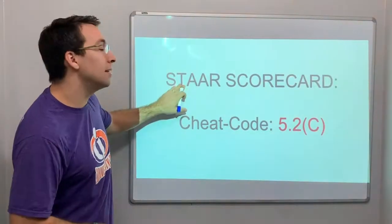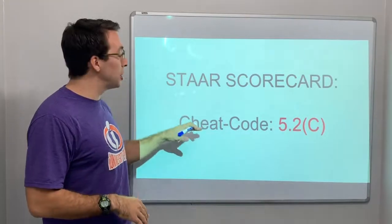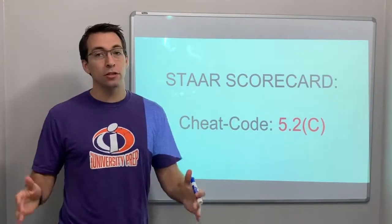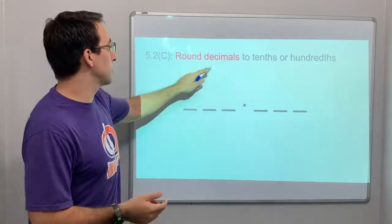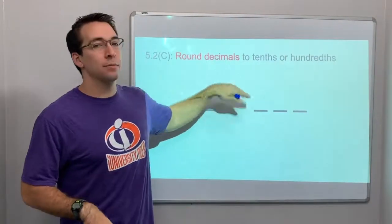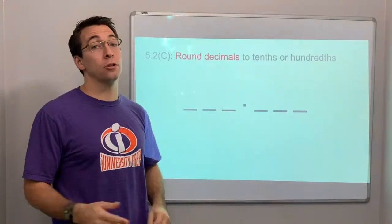Hello again, so today's scorecard, star scorecard, cheat code 5.2C. What is this? All right, well, we're still dealing with decimals, rounding decimals to the tenths or hundredths place.